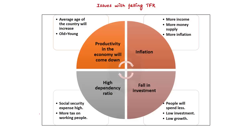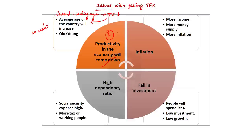Like the advantages, there are also disadvantages of falling TFR. The first is regarding productivity — productivity in the economy will come down. Currently India has most of its population in the working age group of 15 to 65, but if TFR keeps falling, in 20 to 30 years these people will get old and cannot contribute significantly. Additionally, fewer people will be added to the workforce, so productivity will decline.